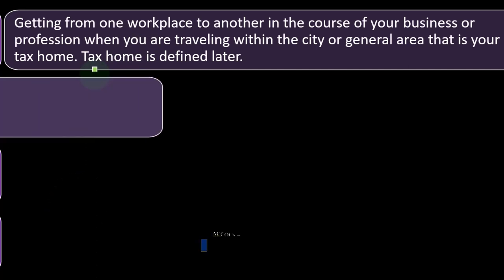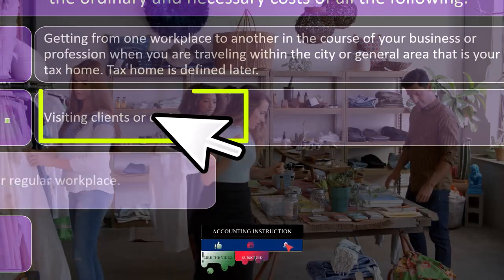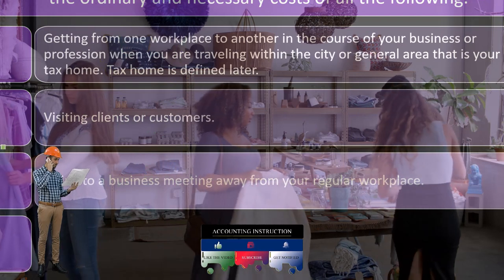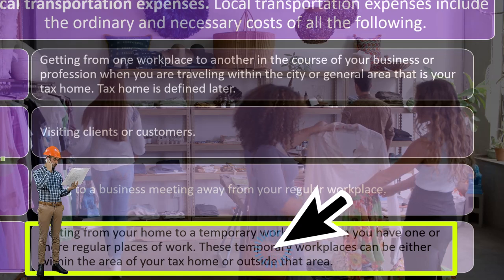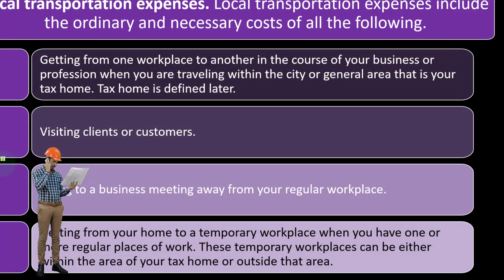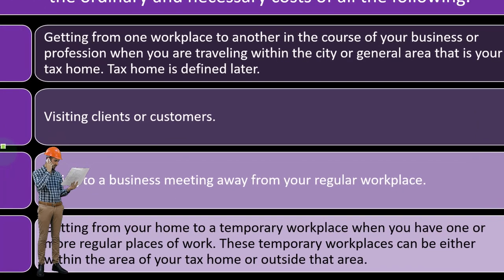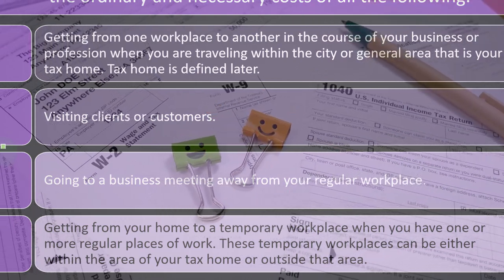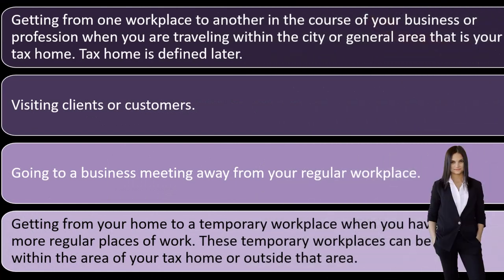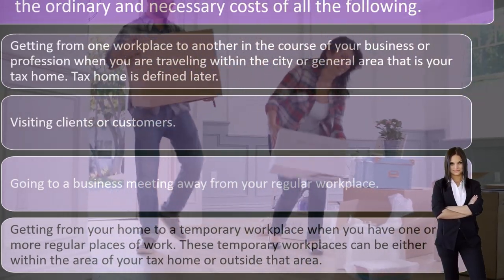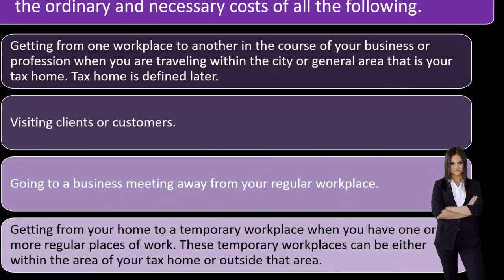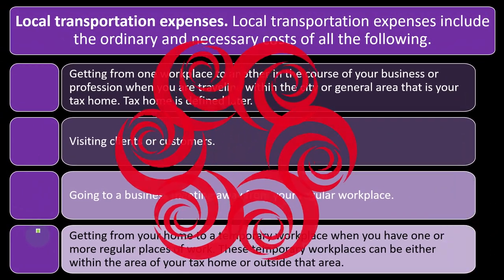Tax home is defined later. Deductible local transportation includes visiting clients or customers, going to a business meeting away from your regular workplace, and getting from your home to a temporary workplace when you have one or more regular places of work. Notice these all revolve around non-commuting miles. Commuting is going from home to your normal workplace, and normal people don't get commuting deductions — like if you have a W-2 job. Temporary workplaces can be either within the area of your tax home or outside it.